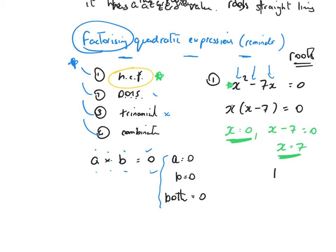A root at 0 and a root at 7 — the curve might look something like a parabola crossing the x-axis at those two points. The important thing we definitely know is there's a root at 0 and a root at 7, and remember that a root is where the curve cuts the x-axis.